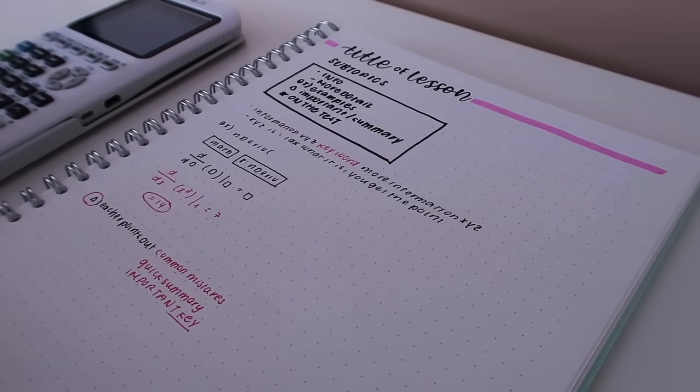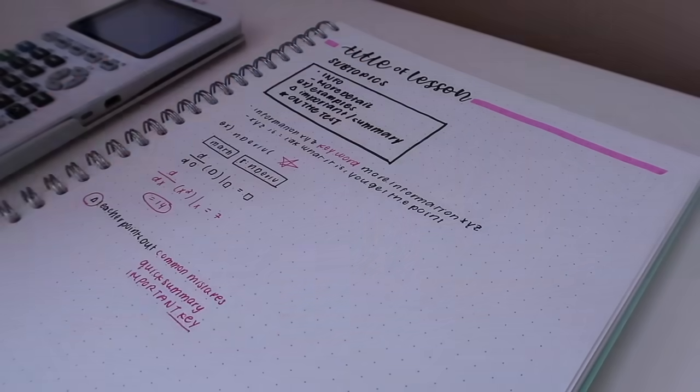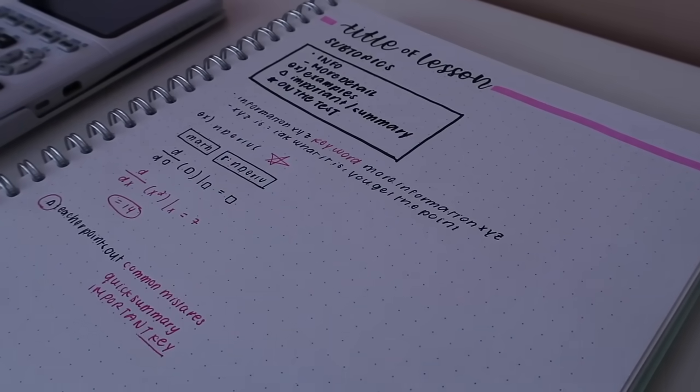Again I use a triangle to indicate mistakes not to make, quick summaries, and a star to indicate possible problems that might pop up on a test.